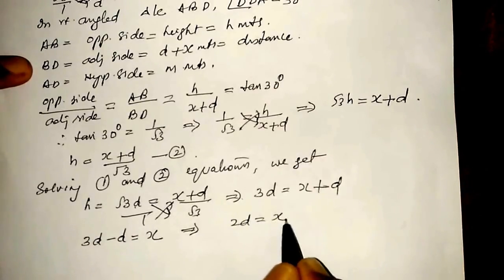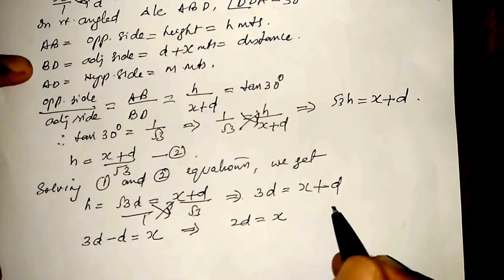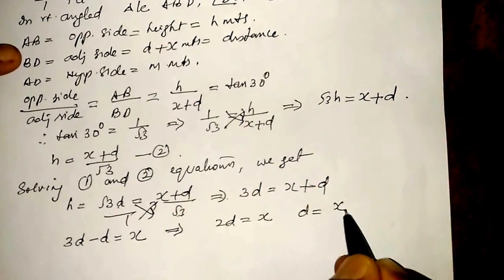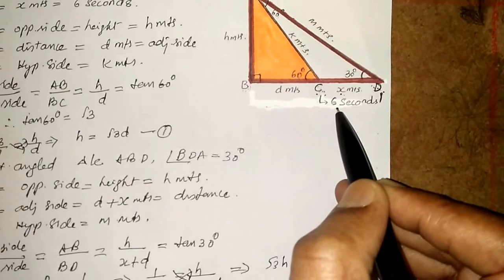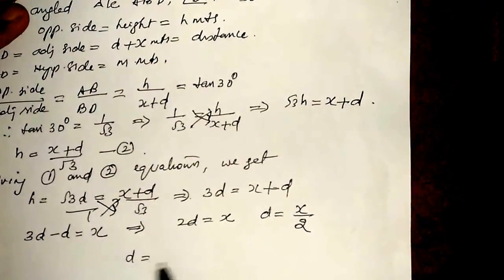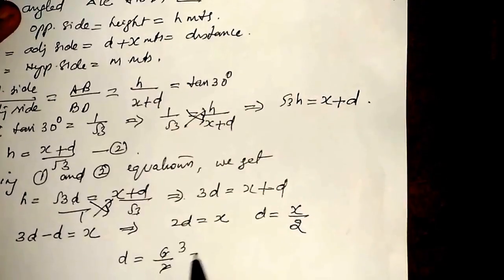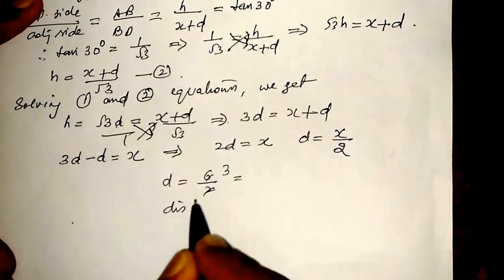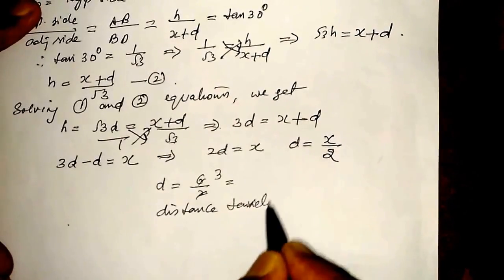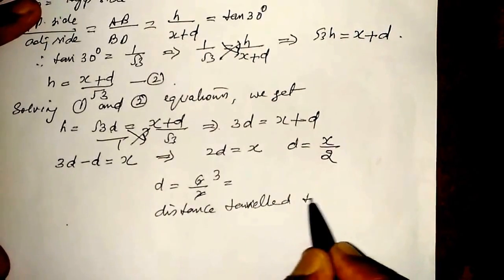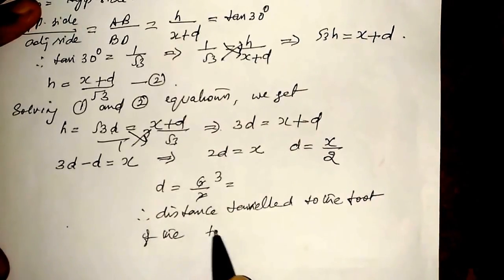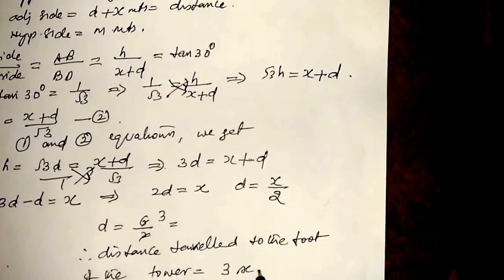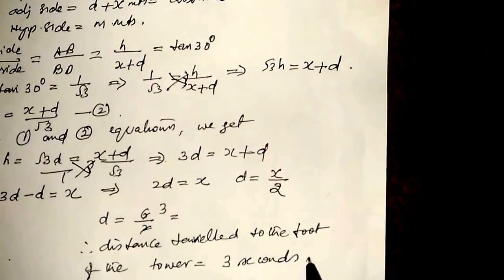Solving the first and second equations: H equals root 3 D equals (X plus D) by root 3. Cross multiplying, root 3 times root 3 gives 3D equals X plus D. Transposing, 3D minus D equals X, so 2D equals X, therefore D equals X by 2. Substituting X equals 6 seconds, D equals 3 seconds. The time taken by the car to reach the foot of the tower is 3 seconds.